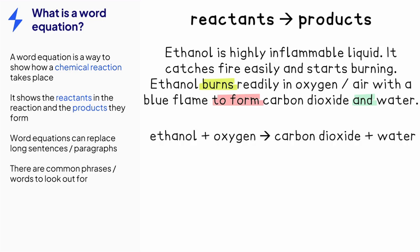From the information, we get the following word equation. The word burns is represented by the plus sign. To form is shown by the arrow. And for carbon dioxide and water, the word and is represented by the second plus sign.